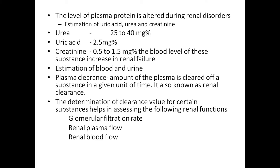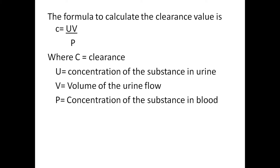Estimation using both blood and urine — plasma clearance refers to the amount of plasma cleared of a substance in a given unit of time, also known as renal clearance. Determination of clearance value helps in assessing glomerular filtration rate, renal plasma flow, and renal blood flow. The formula to calculate clearance value is: C = UV/P, where C is the clearance, U is the concentration of the substance in urine, V is the volume of urine flow, and P is the concentration of the substance in the blood.